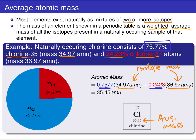We convert percent abundances into fractions by dividing by 100. Then you take the fractional abundance, multiply it by the isotope mass, and add those together for every possible isotope, and you will end up with the average atomic mass — the number that shows up in the periodic table.